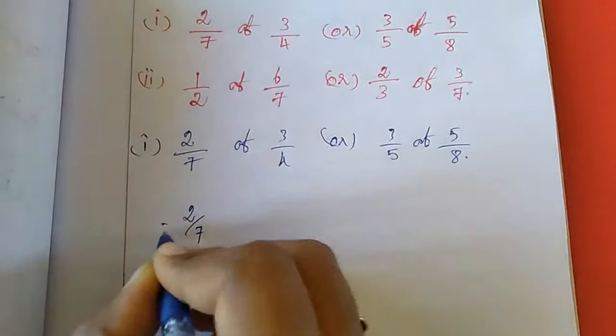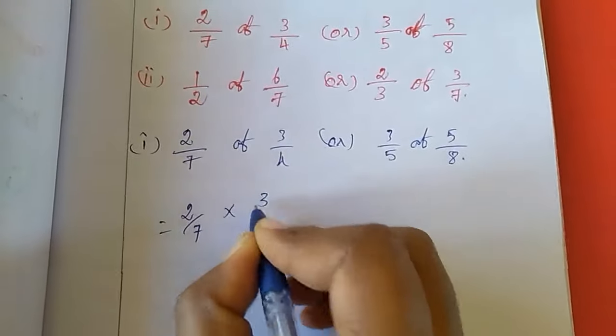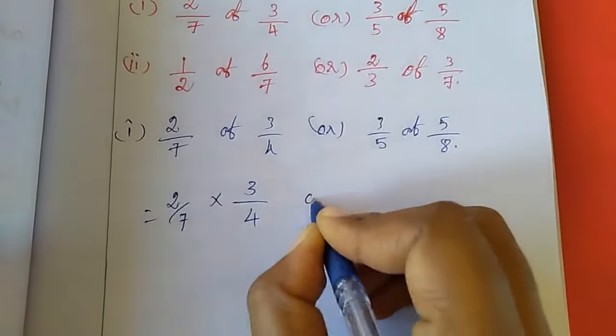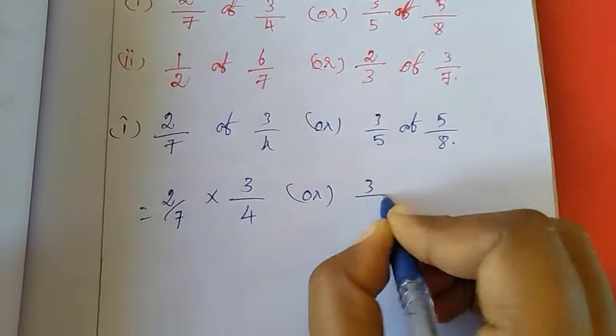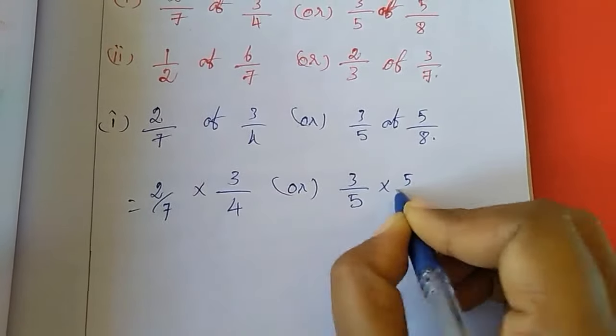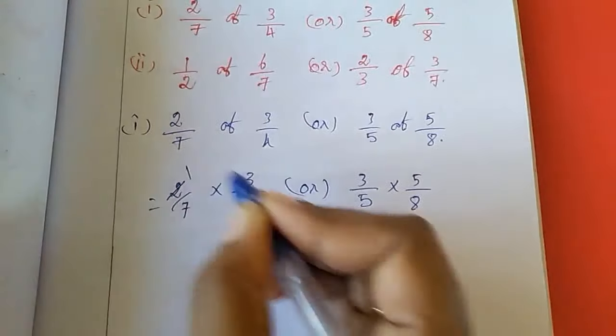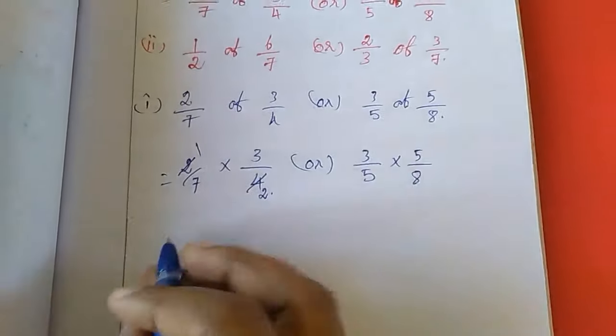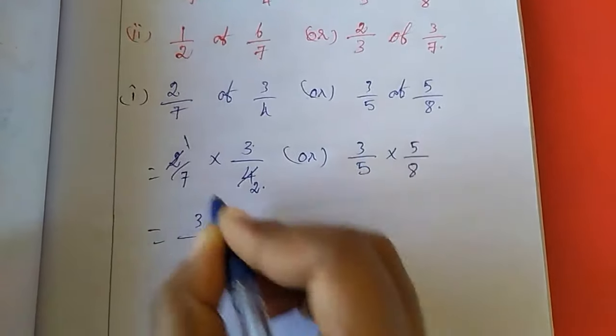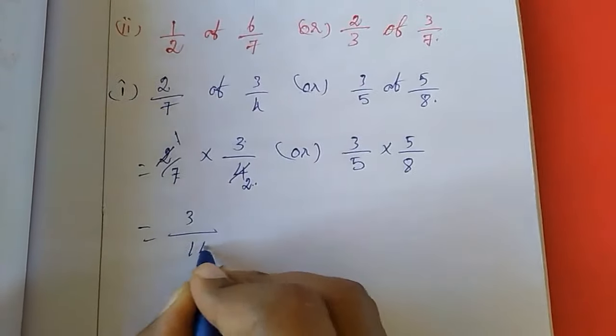2/7 of means multiplication 3/4. See here this 2 we can cancel: 1, 2 is 2, 2 times 2 is 4. Now I am multiplying: 1 times 3 is 3 divided by 7 times 2 is 14. So 3/14 or...